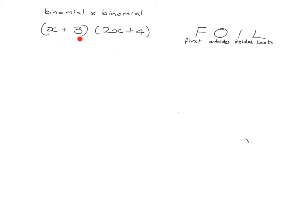Now what we have is this whole bracket has to be multiplied with two x plus four, which means that the three needs to be multiplied with the two x and with the four, but also that the x needs to be multiplied with two x and with the four. In other words, everything in here needs to be multiplied with everything in there. To help us remember to do this, we have the saying FOIL — First, Outside, Inside, Last.